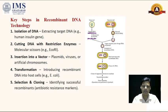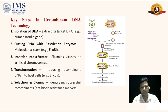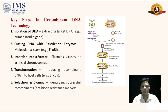The key concepts in RDT involve several steps. First, we need to isolate the genomic target DNA from a particular organism. For example, if we are taking the human insulin gene, that gene will be put onto a vector. We have to cut the DNA using restriction enzymes — molecular scissors — which include endonucleases and exonucleases.